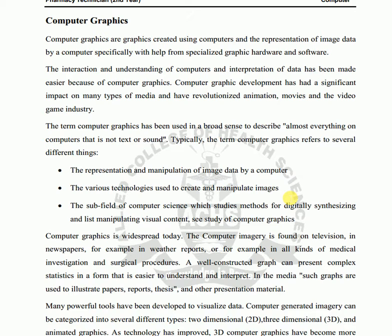Human nature is that reading text documents and paragraphs is less engaging — people prefer images because a graphic or icon can be seen and memorized easily. For example, if you see an M written in yellow color, your mind goes directly to McDonald's — it represents McDonald's instantly.